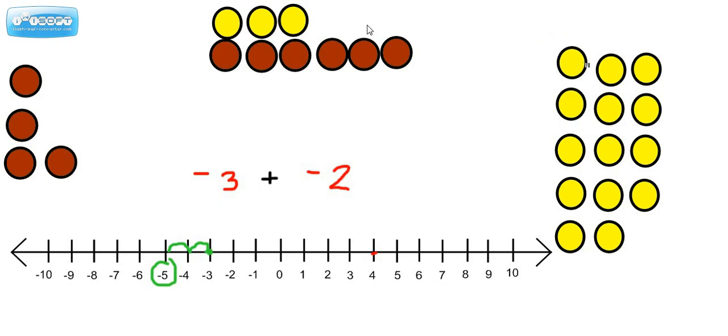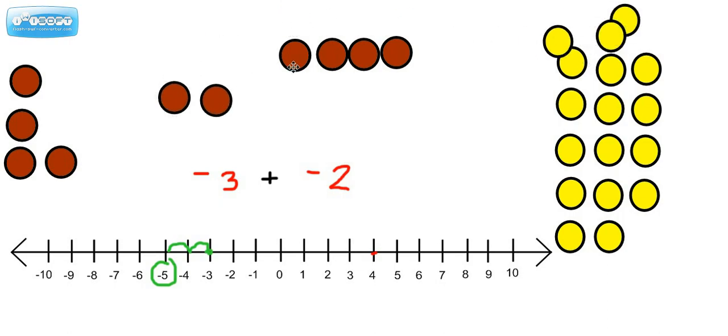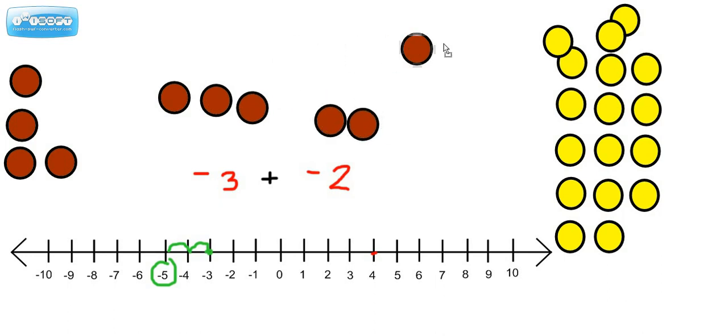Now if we use the integer chips to help us understand, I'm going to put all these positive chips back, because they don't apply. We're really saying that we have 3 red chips, and we have 2 red chips, and we're combining, and they want to know how many red chips do we have all together. And if we count all these up, we have negative 5 red chips.